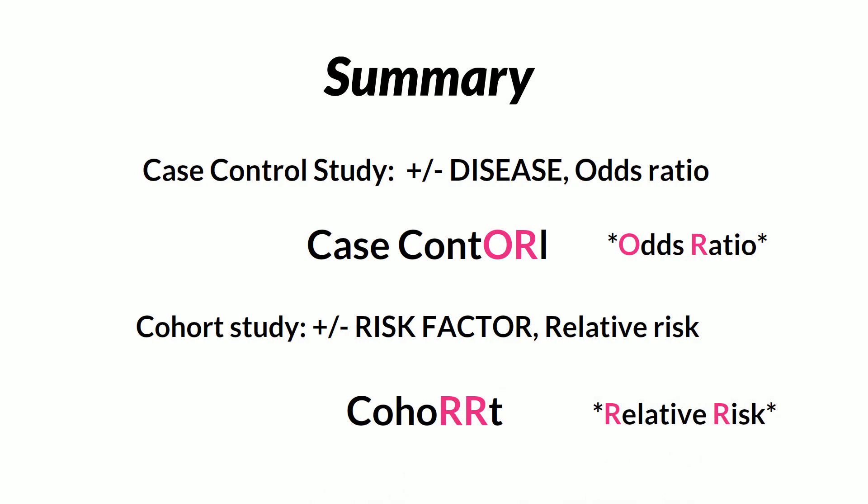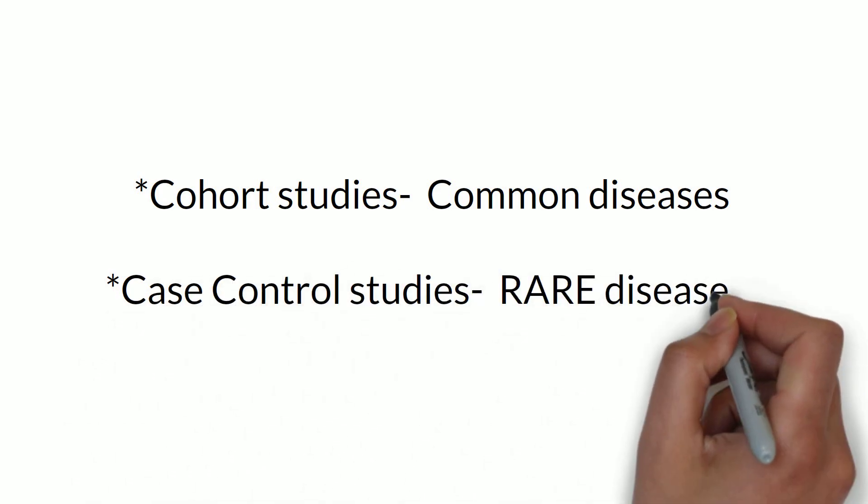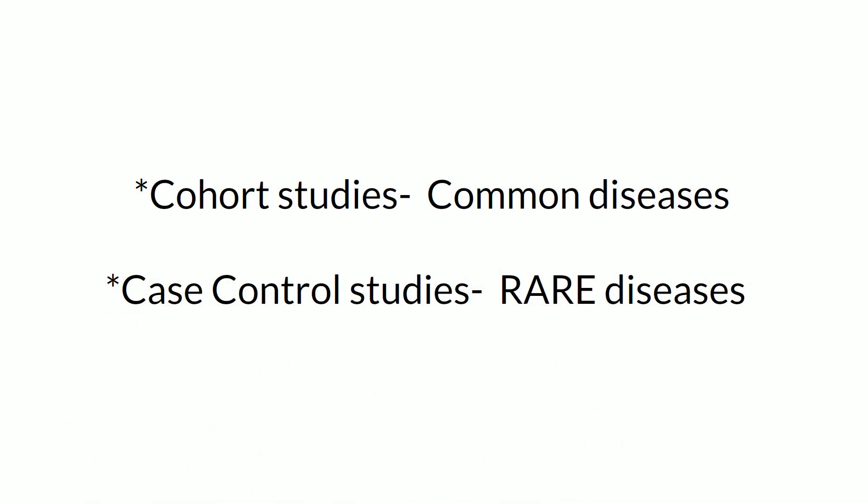The next high-yield point you must remember is that cohort studies are good for studying common diseases, while case control studies are good for studying rare diseases. If it's a rare disease and we do a cohort study, there's a good chance the people we're studying might not develop the disease, since it's rare in the population — so it will be a waste of time and resources. With a case control study, we already have the people with the rare disease and can follow up to see if they were exposed to the risk factor.